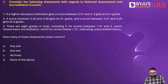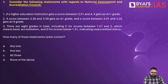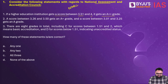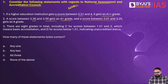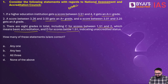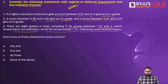Now let's begin with the first question on your screen. Consider the following statements with regards to the National Assessment and Accreditation Council, also known as NAAC. Number one: if a higher education institution gets a score between 3.51 and 4, it gets an A++ grade. Second: a score between 3.26 and 3.50 gets an A+ grade, and a score between 3.01 and 3.25 gets an A grade. Third: there are 8 grades in total, including C for score between 1.51 and 2, indicating basic accreditation, and D for score below 1.51, indicating unaccredited status. How many of these are correct?